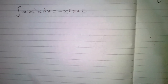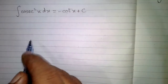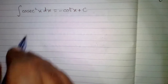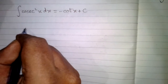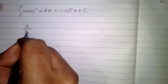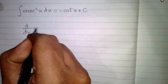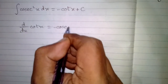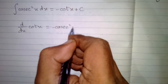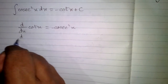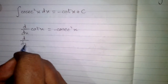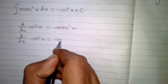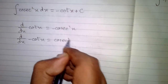In this video, we will prove that the integral of cosec square x is minus cot x plus c. We know that the derivative of cot x is minus cosec square x. So, the derivative of minus cot x is cosec square x.